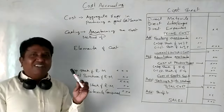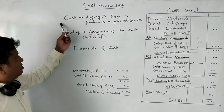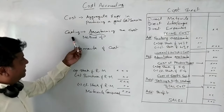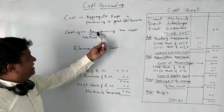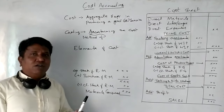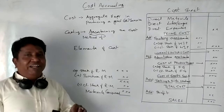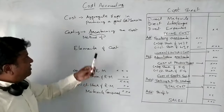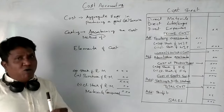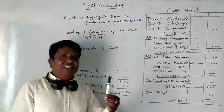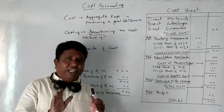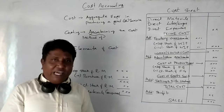The next word is Costing. Cost and Costing are different. Costing is a method of ascertaining cost. If you calculate the cost using a specific method, that method of ascertaining the cost is called Costing.